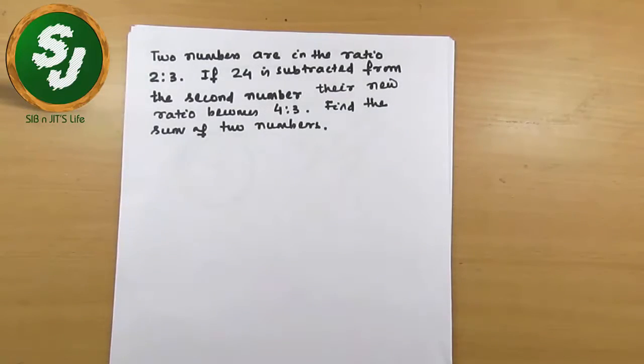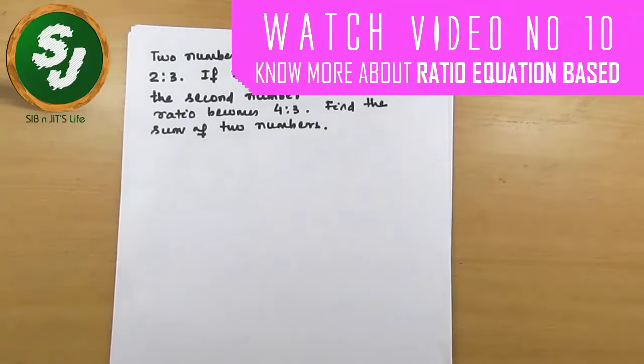in the ratio 2 is to 3. If 24 is subtracted from the second number, their new ratio becomes 4